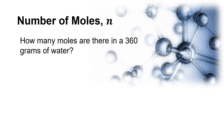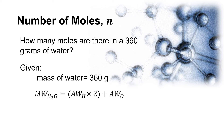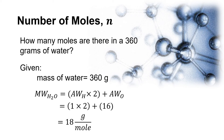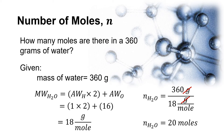Another example: how many moles are there in 360 grams of water? The given substance is a compound, water, with a mass of 360 grams. The chemical formula of water is H₂O. Its molecular weight is twice the atomic weight of hydrogen plus the atomic weight of oxygen: (1 × 2) + 16 = 18 grams per mole. The number of moles of water is 360 grams divided by 18 grams per mole, which equals 20 moles.